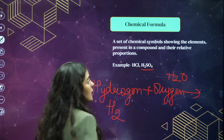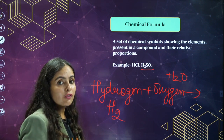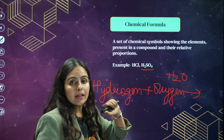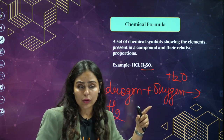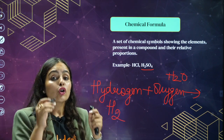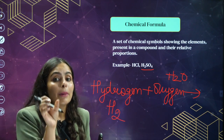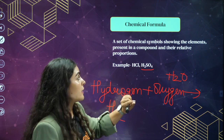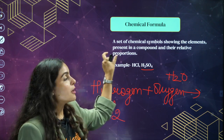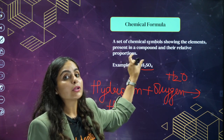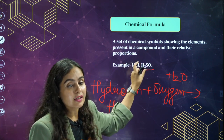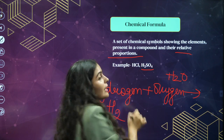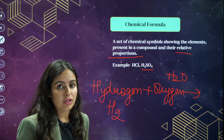For example, water is H2O, sulfuric acid is H2SO4, and HCl is hydrochloric acid. So in every compound, every formula, we showcase the elements by their symbols with relative proportion.